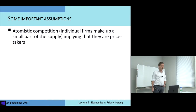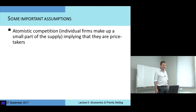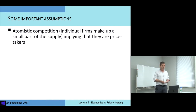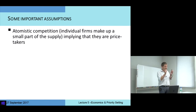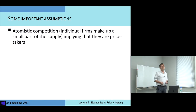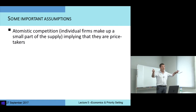In order for markets to function well there are a number of assumptions required. Perhaps the most important is something called atomistic competition — the idea that any particular supplier, called a firm, makes up only a small part of the overall supply. The implication of being such a small part is that they are what we call price takers: any one firm cannot choose the price independently of everybody else.